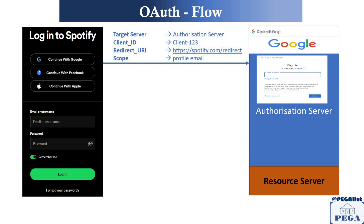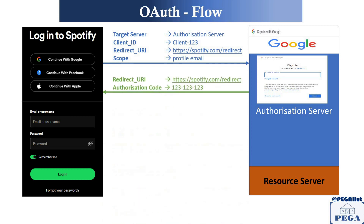Spotify also passes the scope it is looking for, and based on that Google decides whether to allow it or not. Now let's say you got the sign-in page and successfully signed into Google. What happens next is Google calls back to the redirect URL — Spotify in our case — and sends an authorization code. This authorization code is Google hinting to Spotify that the resource owner is authorized and you're good to go.